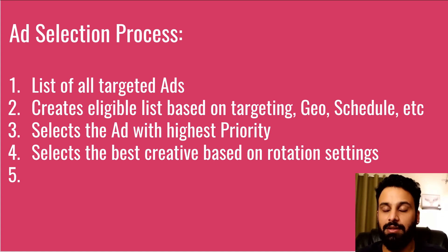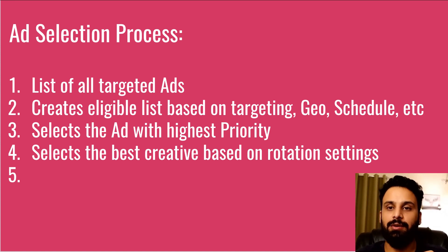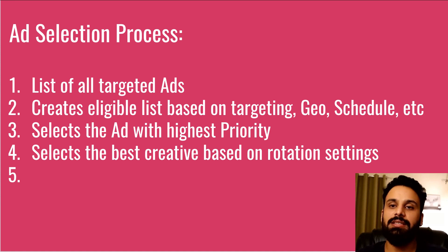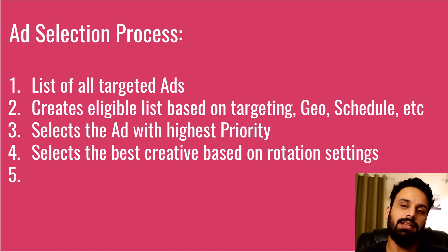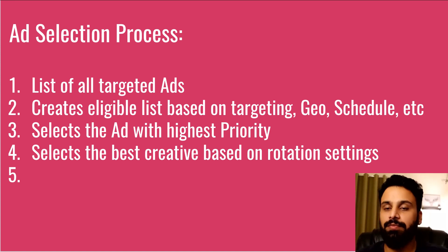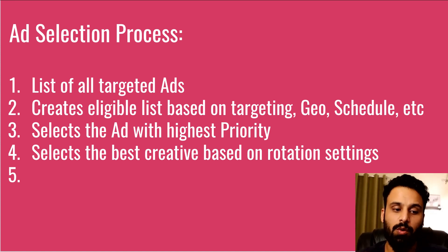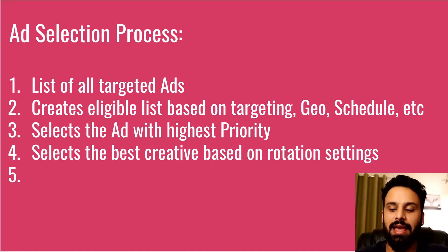Third, Campaign Manager selects the ad with the highest priority. When we create an ad in Campaign Manager, we assign a priority, and the highest-priority ad is returned. If that ad has multiple creatives — for example, one with a black background and one with a white background — Campaign Manager applies the creative rotation settings. For example, with even rotation, if a black background creative was returned last time, it will return the white background this time.